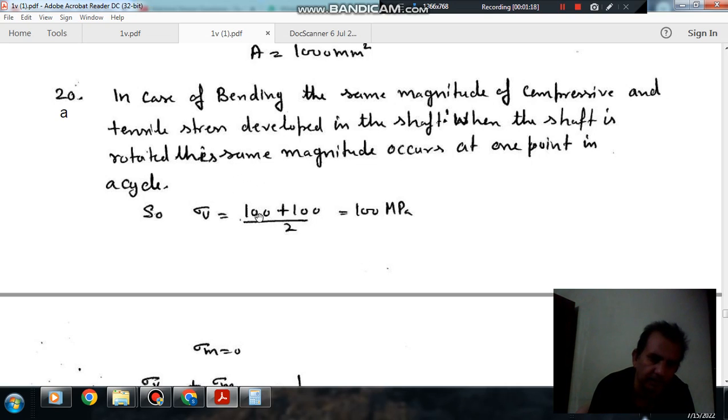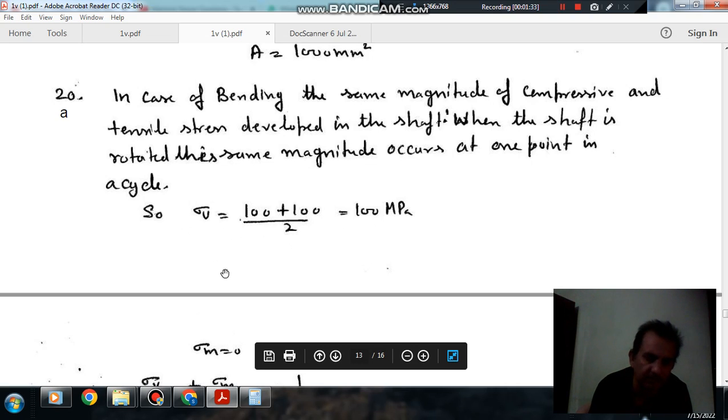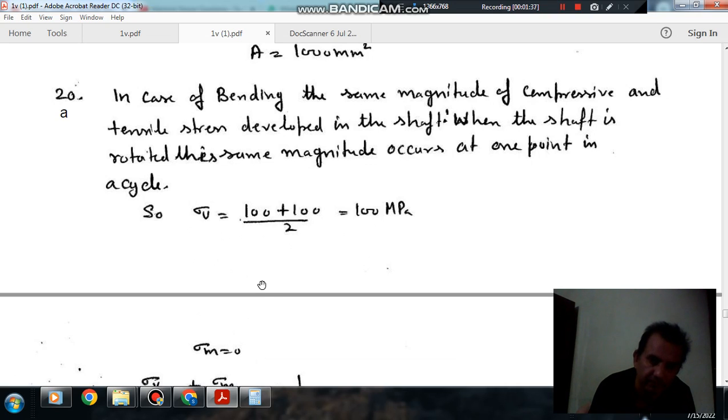The variable stress component sigma_a equals (sigma_1 minus sigma_2) divided by 2, where sigma_1 is 100 MPa tensile and sigma_2 is minus 100 MPa compressive. The mean stress sigma_m equals (sigma_1 plus sigma_2) divided by 2.